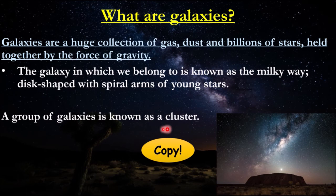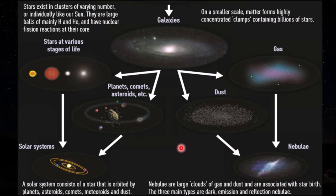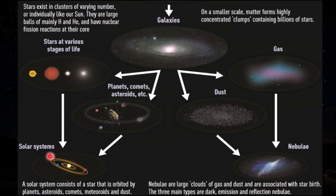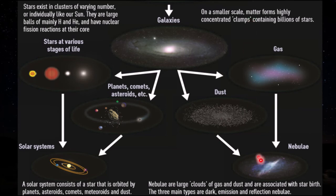If we have a group of galaxies, we call that a cluster. Let's review the different sizes in the universe: starting from the universe, we have clusters — a group of galaxies. Inside galaxies, you have solar systems and stars. Some stars might be bigger than a solar system depending on the type. Then you have the planets, and smaller than the planets you'll have things like comets and asteroids. Nebula is the earliest stage of what a star is, which we'll talk about later.